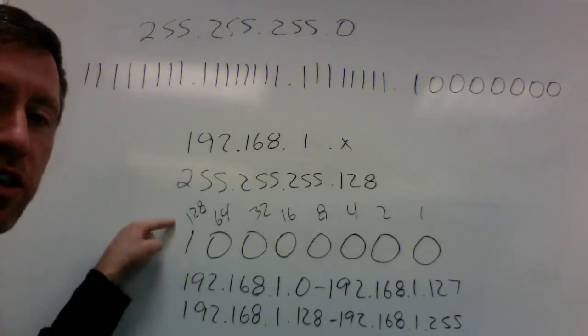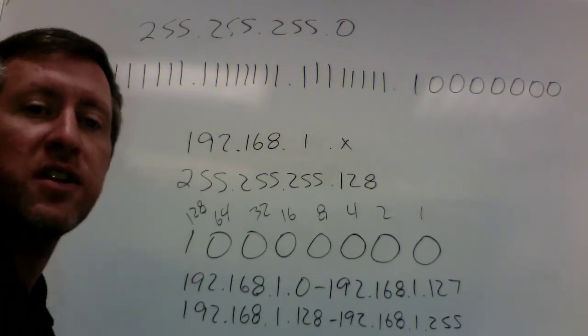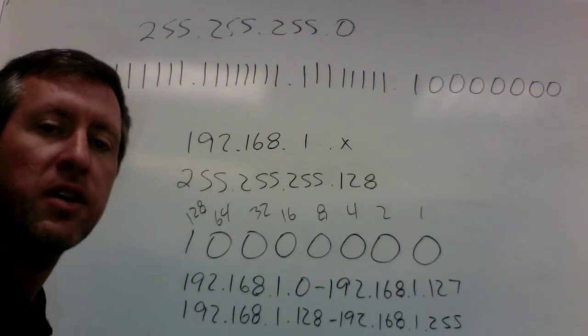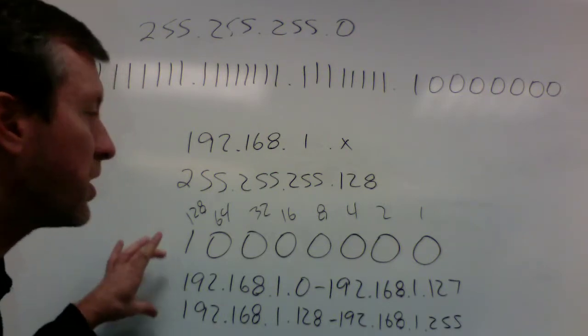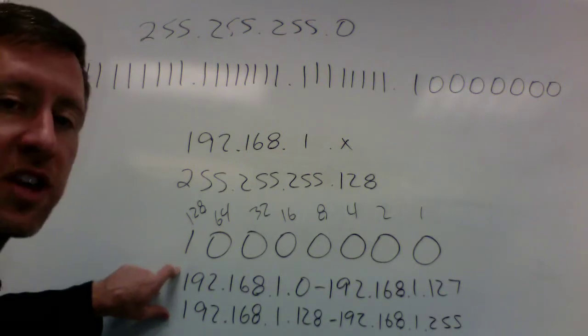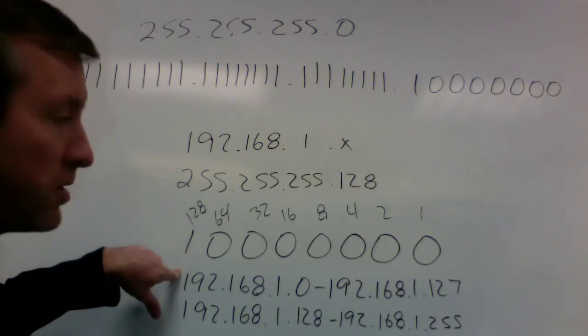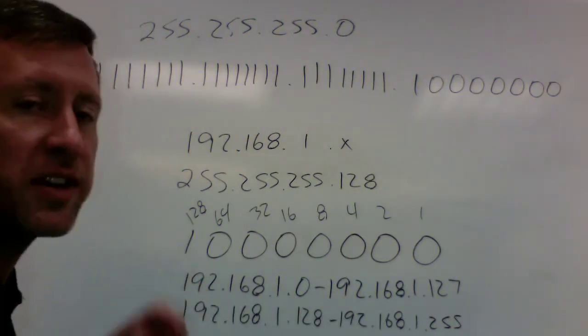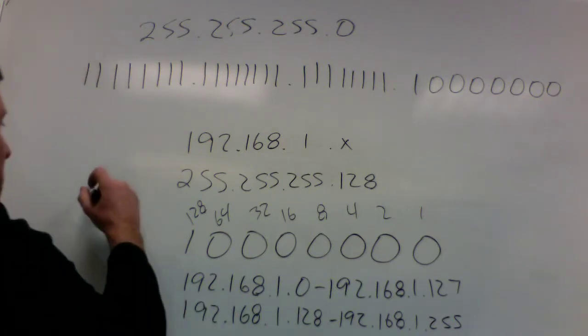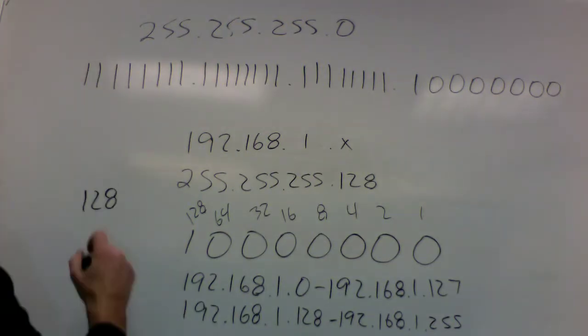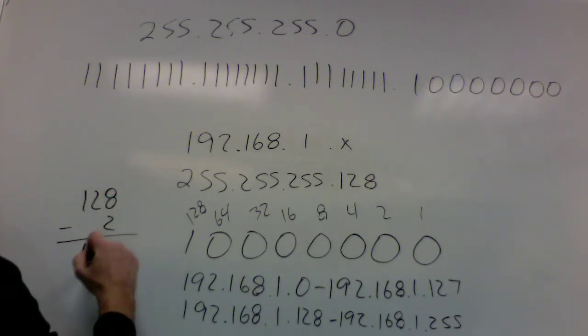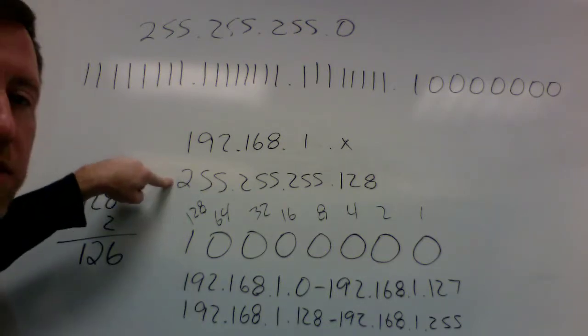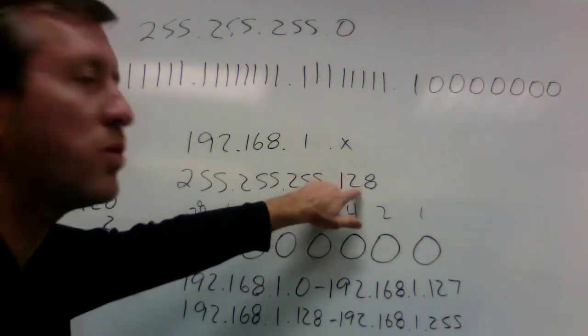Now, of course, remember, you probably heard me use the term total IP addresses. This is not the number of usable IP addresses for hosts or clients or computers on this network. This is the number of total IP addresses. Because in every network, you've got a network ID, which is the very first IP address here, and then you've got a broadcast IP, which is the very last IP address in that range. So if we wanted to find out how many usable hosts are on there, I simply say I've got 128 total IP addresses, I subtract two. That means that I can actually put 126 computers on each of these networks using the subnet mask of 255.255.255.128.